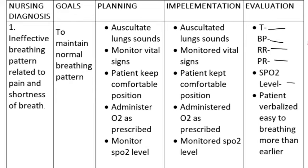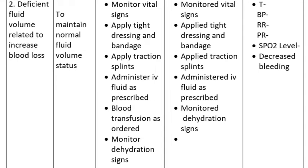Nursing Diagnosis 2: Deficient fluid volume related to increased blood loss. Goal: To maintain normal fluid volume status. Planning includes: monitor vital signs, apply tight dressing and bandage, apply traction and splints, administer IV fluid as prescribed, blood transfusion as ordered, and monitor for signs of dehydration.